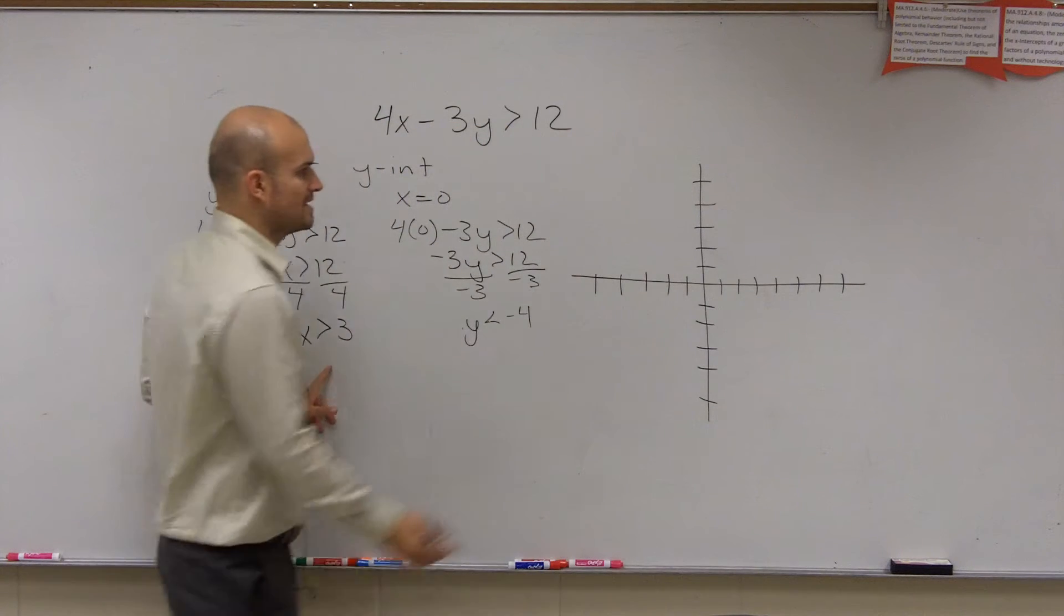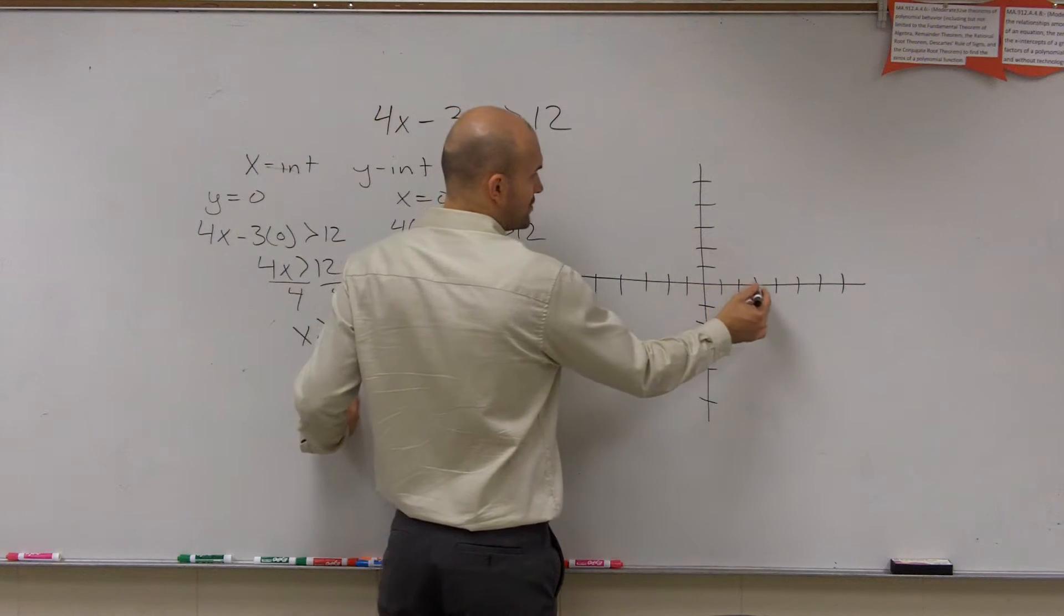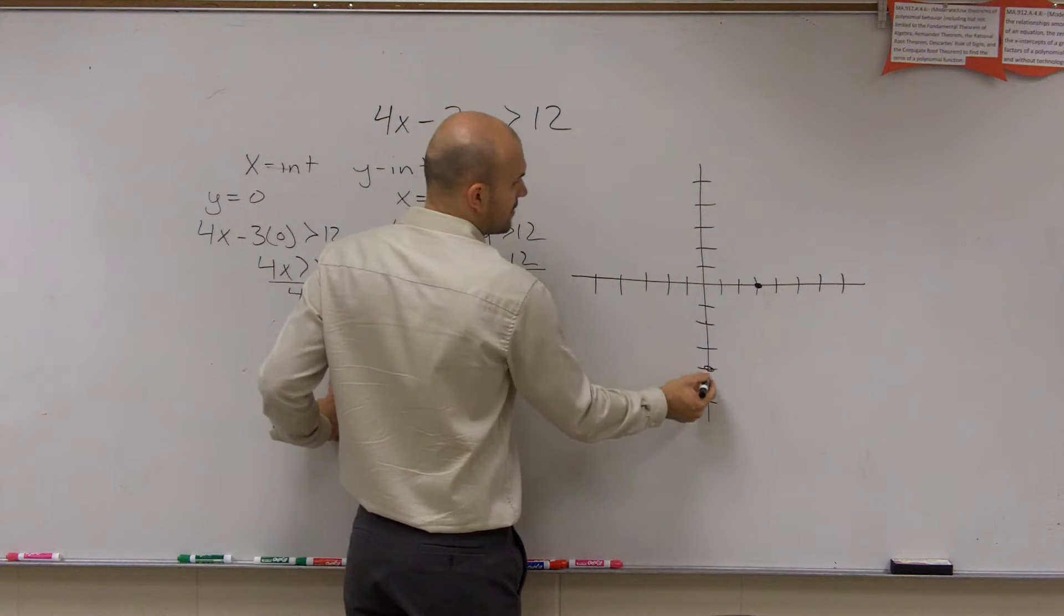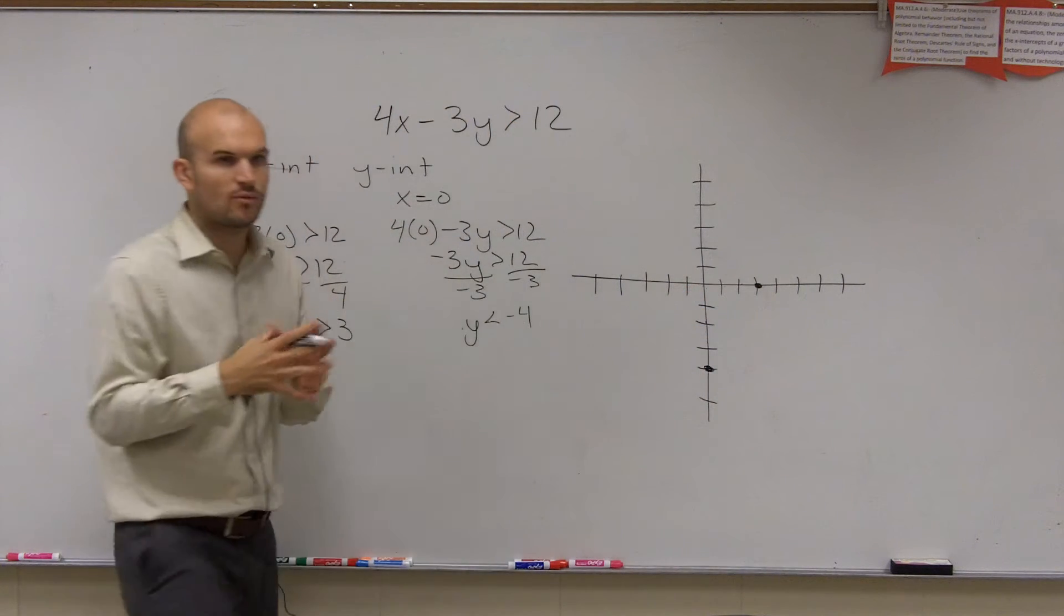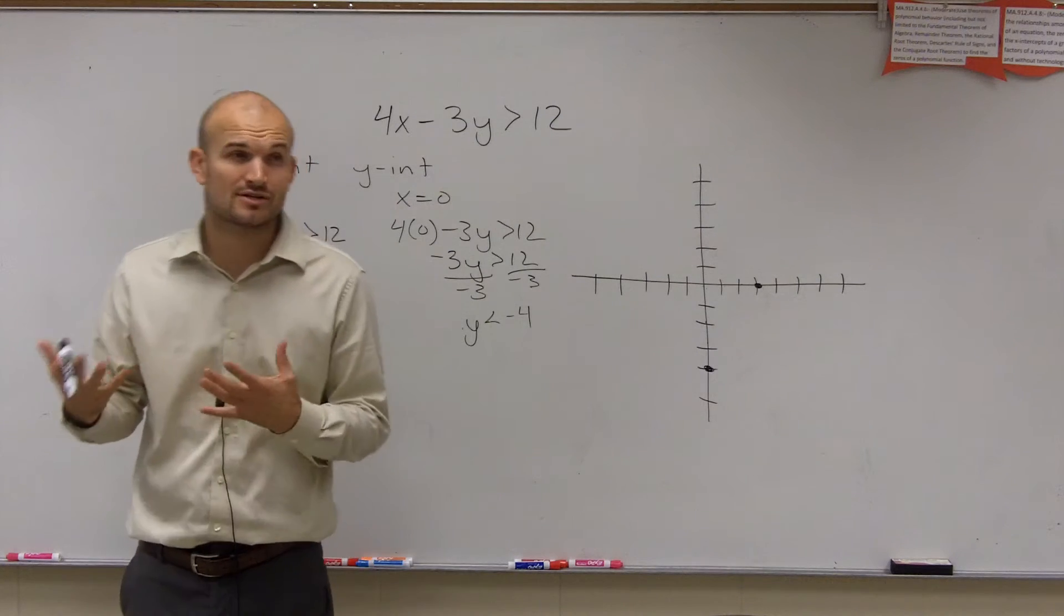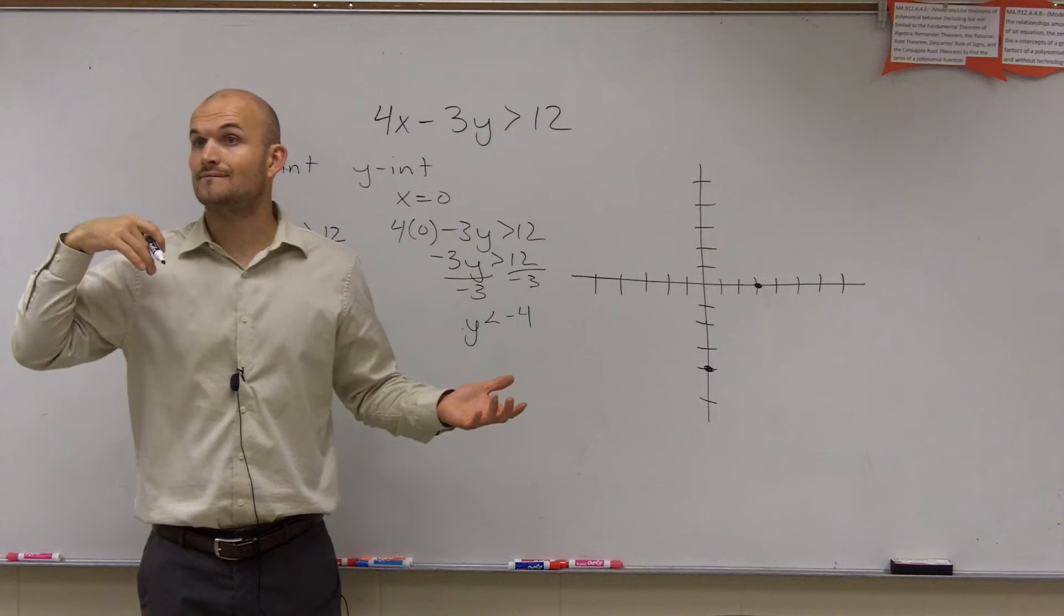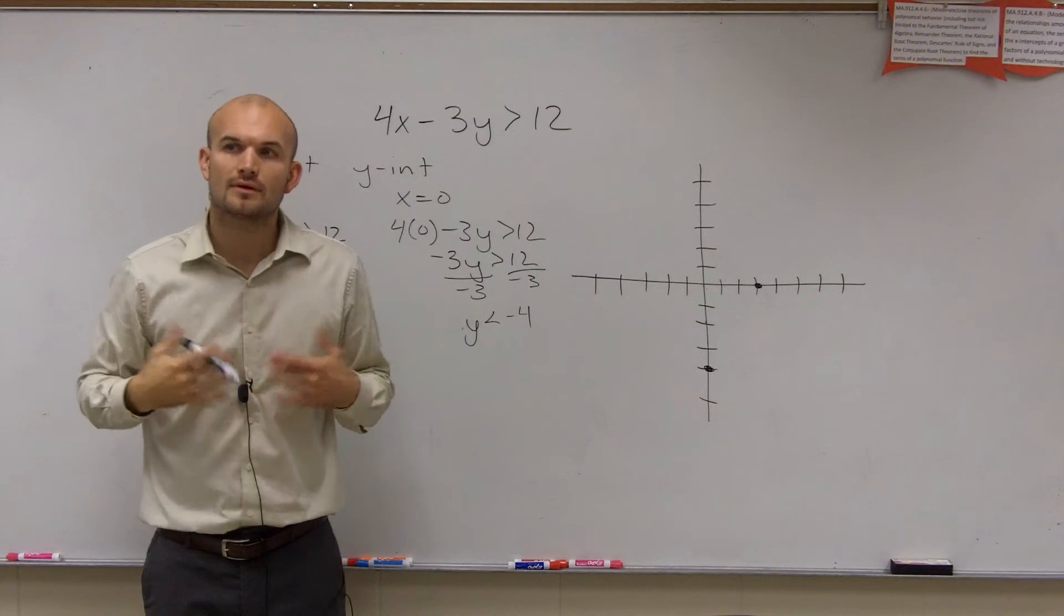So my x-intercept is going to be at positive 3, so I go 1, 2, 3. My y-intercept is at negative 4: 1, 2, 3, 4. All right? Now, remember, when do we determine is my line dashed or is it solid? You could use a test point for that or also, you could also do what? When it's always less than or greater than.